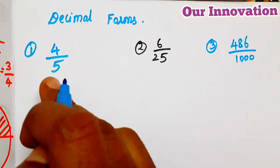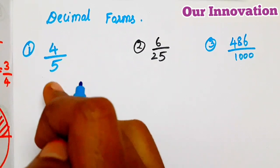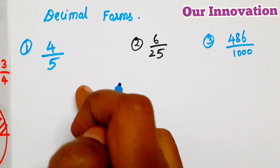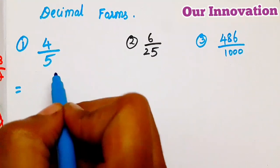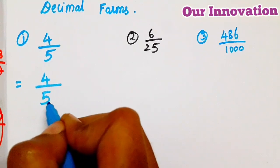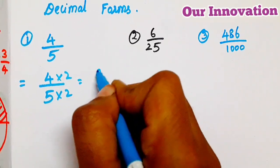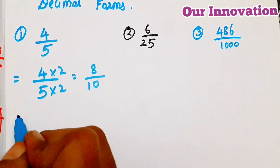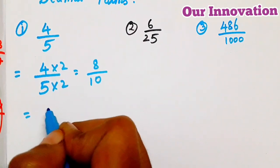First, you have to write the denominator. You have to write decimal forms. So the answer is 0.8.